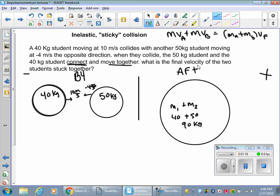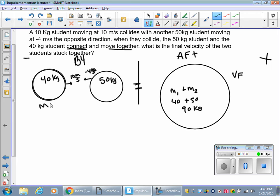What is the final velocity of the two students stuck together? Notice I didn't give you a direction, right? We're able to figure that out because the momentum has to be conserved on both sides. Whatever the momentum over here is has to be the same as over here.